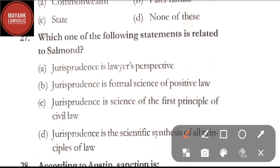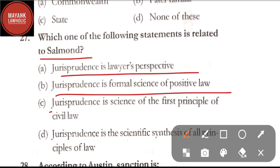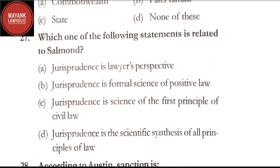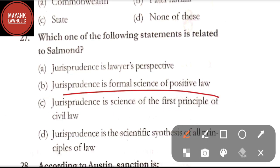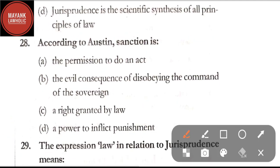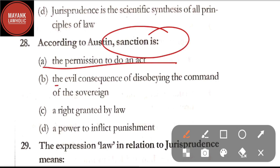Question number 27: which one of the following statements is related to Salmond — option A: jurisprudence is a lawyer's perspective; option B: jurisprudence is the formal science of positive law; option C: jurisprudence is the science of the first principle of civil law; option D: jurisprudence is the synthetic scientific synthesis of all principles of law. The correct answer is option C, jurisprudence is the science of the first principle of civil law.